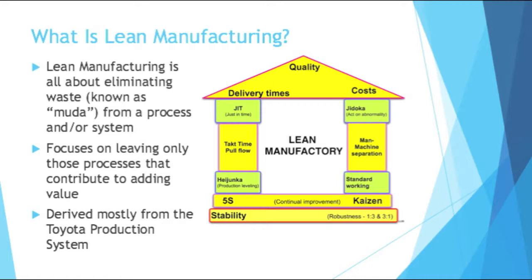As the foundation for these pillars, you have kaizen, which is continuous improvement — I'll talk more about that later — and 5S. 5S is all about organizing your plant. Think of it as industrial cleaning. I'll do a separate video on 5S in the future.